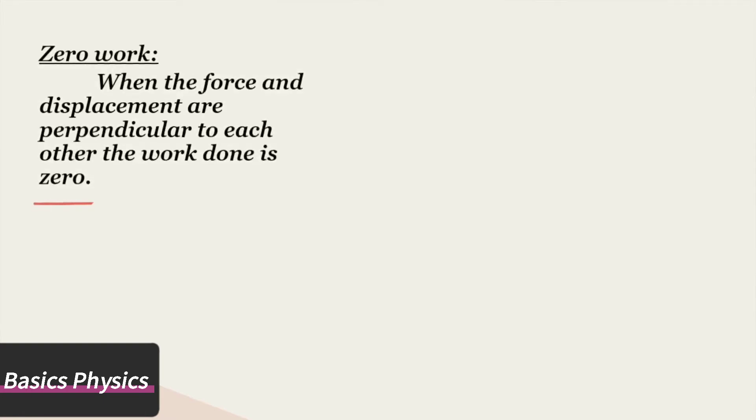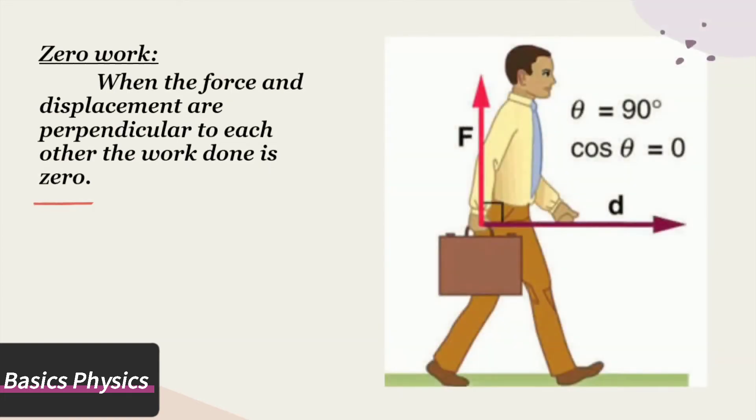In the above figure, a person is holding a suitcase and moving. He lifts the suitcase in upward direction and moving. The force and direction of motion are perpendicular to each other, so the work done is zero.